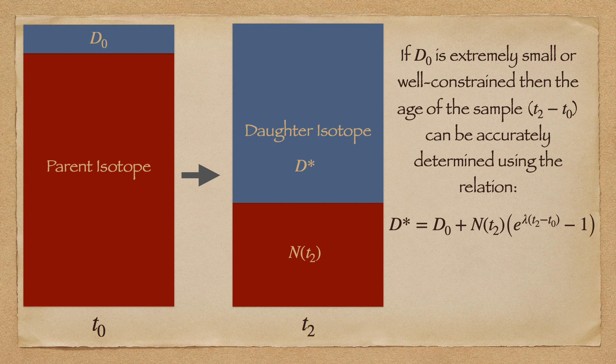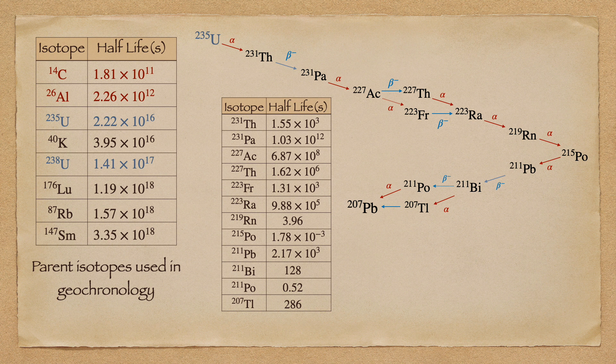It turns out that in a lot of cases we actually have a very good idea of the initial concentration of the daughter isotope from general geochemical observations. For some systems this requires some skill, but geochemists are very clever that way. Over the years they've managed to compile an extensive list of isotopic abundances for a wide range of geochemical systems. The table on the left here shows a list of radioactive elements that are commonly used in radiometric dating studies, each listed with its corresponding half-life. Carbon-14 and aluminium-26 are listed in red because they are a special class of radioactive isotope known as cosmogenic radioisotopes, which I will be discussing in a later episode. On the right hand side of this slide, we see the decay chain for uranium-235 to lead-207.